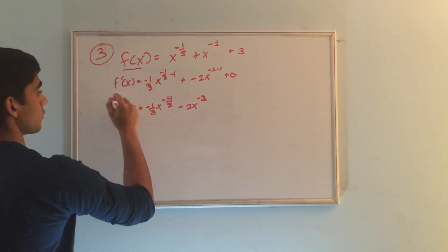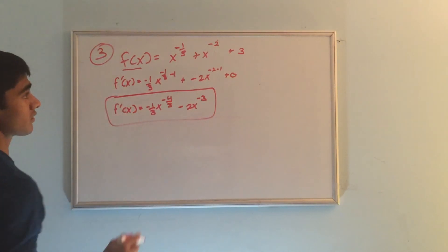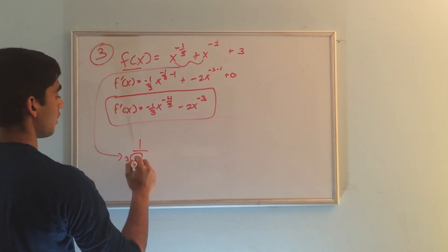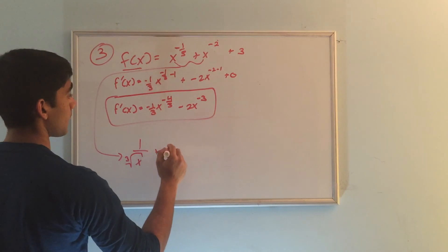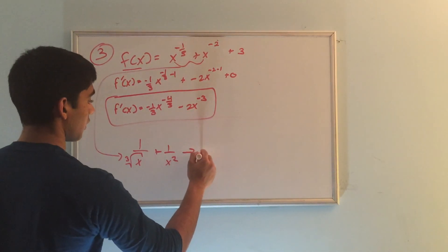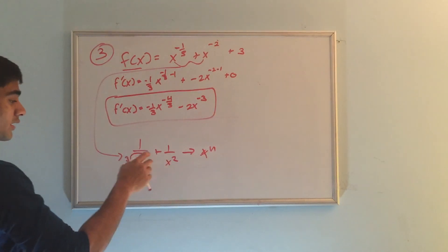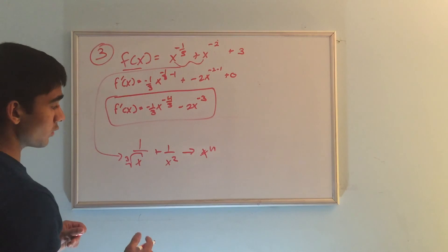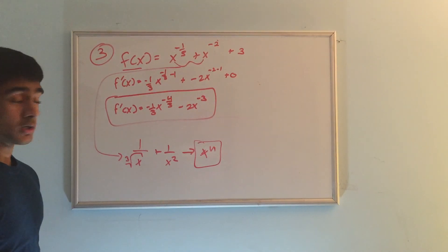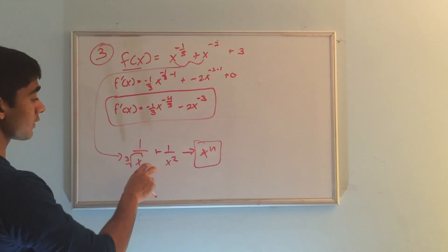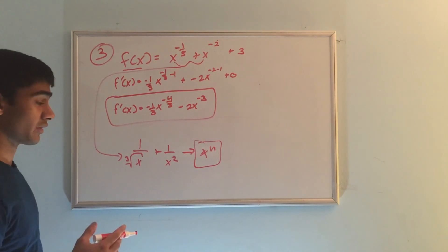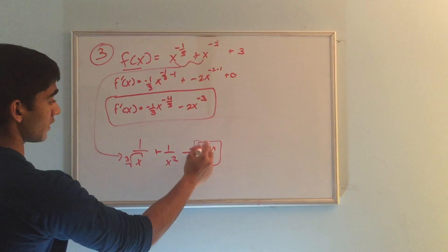Notice that these two terms can be written as 1 over the cube root of x and 1 over x squared. But this format is not in the form of the power rule we need — x to the nth power — and looking at it that way, we can't easily find the derivative. So we always need to convert it into a base x raised to a constant power. Whenever you see something complicated like this, immediately convert it into x to the nth power — n can be negative, a fraction, a decimal, anything.